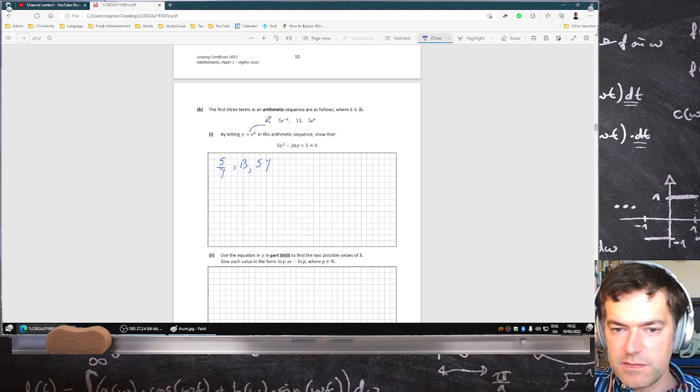By subbing this in, and because it's arithmetic, it means 13 minus 5 over y would be equal to 5y minus 13. If I multiply by y, I get 13y minus 5 equals 5y squared minus 13y. Taking everything to the right: 5y squared minus 26y plus 5 equals 0. That matches up nicely.